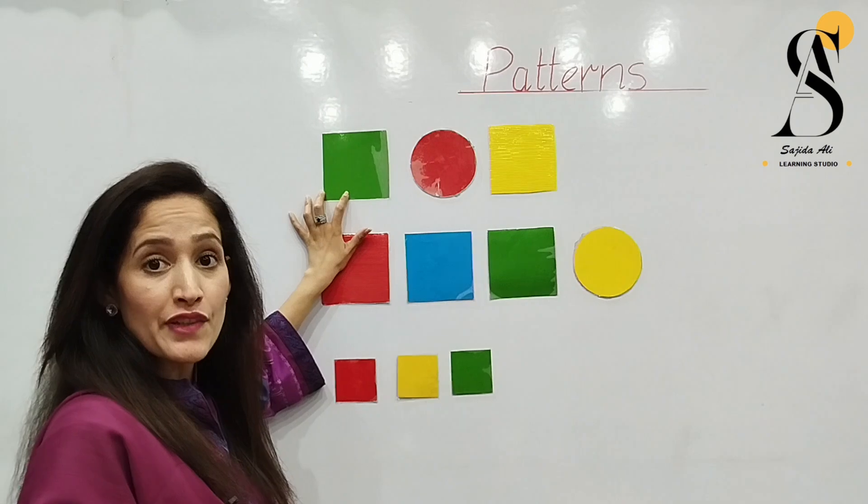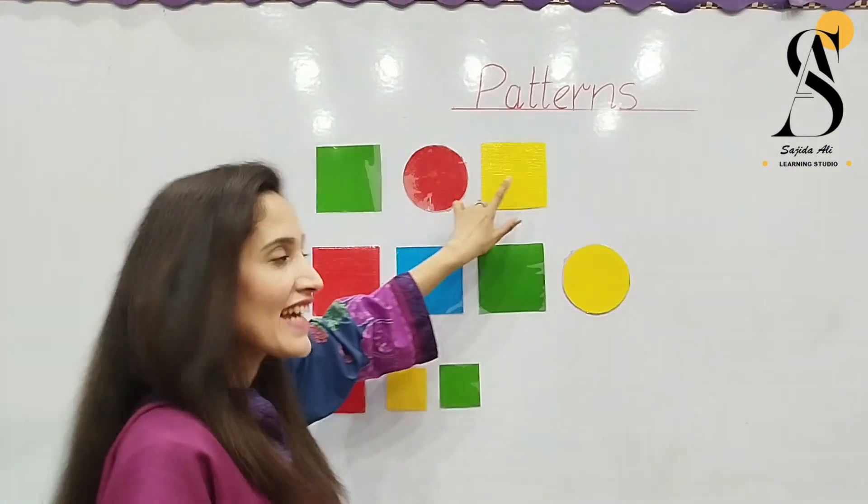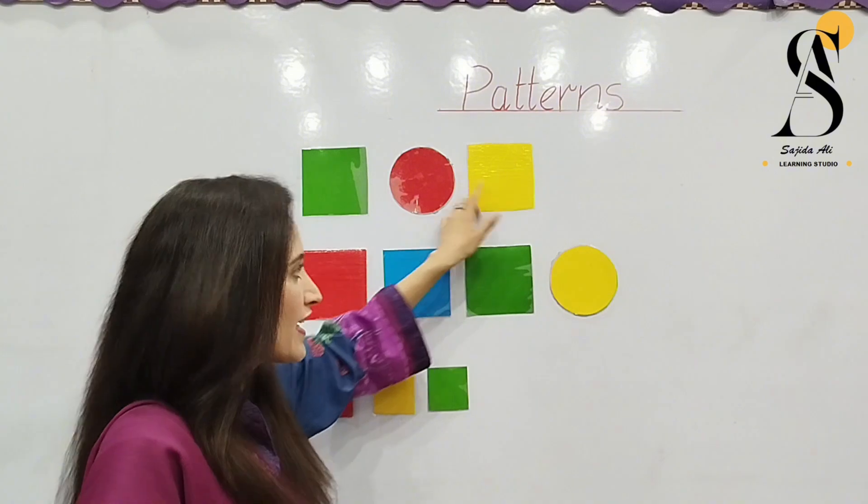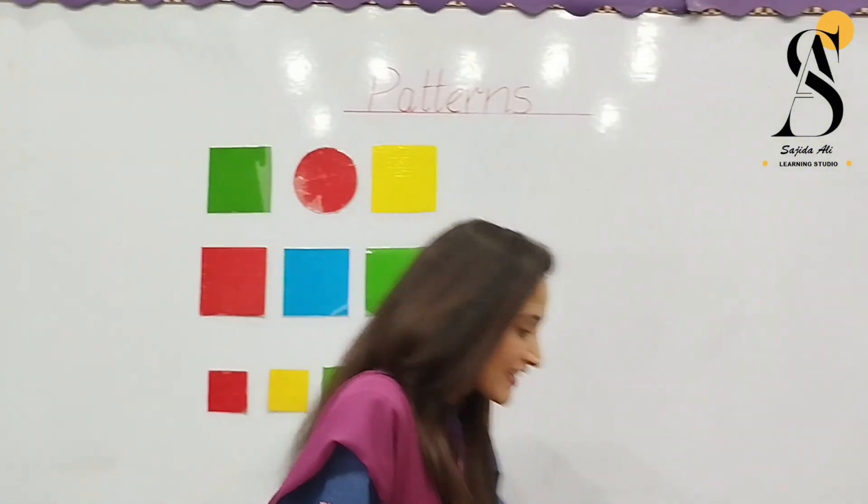You can see here a green square, then a red circle, then a yellow square. So what will come next? Which pattern is going to come next? Let's see.